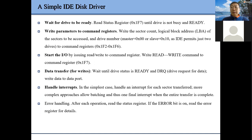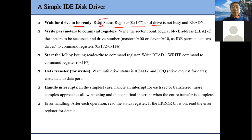The simple process is: first we read the status register — 0x1F7 is both our command register and status register — we read this to wait until our driver is ready. Then we set up how many sectors we want to read and the address.